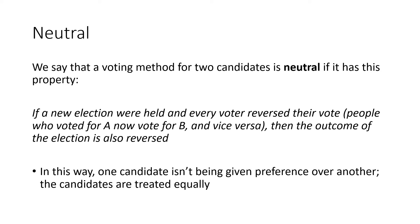The next property is neutral. A voting method for two candidates is neutral if, when a new election is held and every voter reverses their vote — if I voted for A the first time I now vote for B, and vice versa — then that should also reverse the result of the election. If everybody changes their vote to the other candidate, the other candidate should win. In this way, one candidate isn't given preference over another — the two candidates are treated equally. So anonymous meant voters are treated equally; neutral means candidates are treated equally.